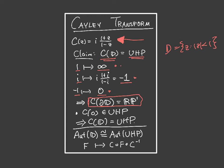Now plug in 0 and get i, so C sends 0 into the upper half plane. Then we make another continuity argument: if a point in the disk mapped to the lower half plane, you could connect that point to 0 on a line segment, and somewhere on that line segment C would have to map into RP1 — but that would be a problem because it only sends the unit circle to RP1. You can make a similar argument for the complement of the closed disk within CP1, showing it maps into the lower half plane. So the Cayley transform maps the disk onto the upper half plane.